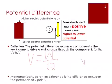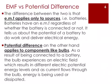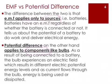A voltmeter can be used to measure the potential difference across an electrical component such as a light bulb. The definitions for EMF or electromotive force and potential difference may seem similar. The difference between the two is that EMF applies to sources such as batteries, whereas potential difference applies to components such as a light bulb. The EMF of the battery tells us about the potential of a battery to do work and deliver electrical energy — the conversion of energy is from chemical to electrical — whereas potential difference tells us how much electrical energy is being used or dissipated into other forms.